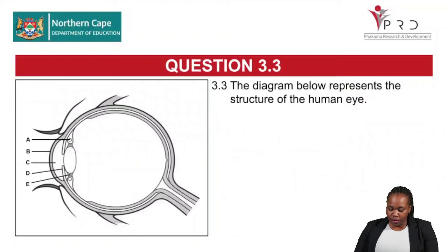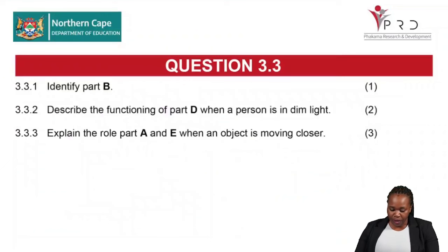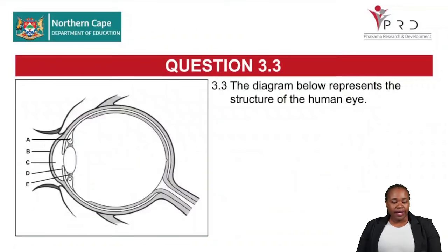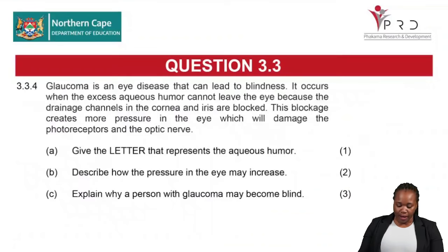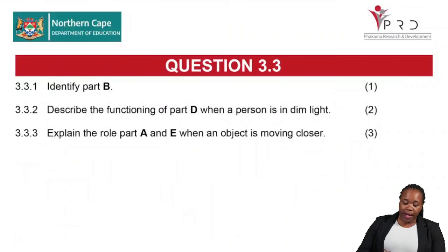Question 3.3 presents the different parts of the human eye. Know how to label these parts before learning anything else. The diagram represents the structure of the human eye. Question 3.3.1 asks to identify Part B, which is the cornea — it is the very first layer at the front of the eye, where the sclera continues as the cornea.